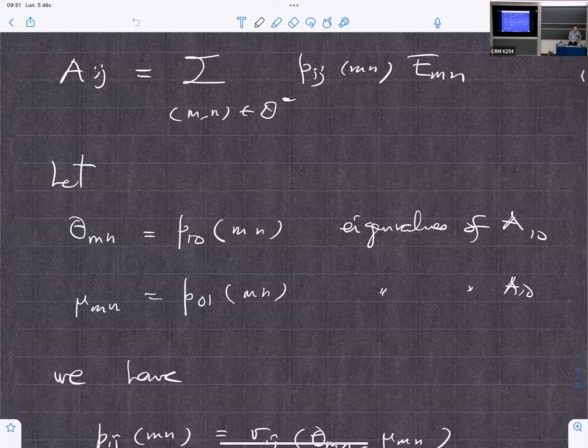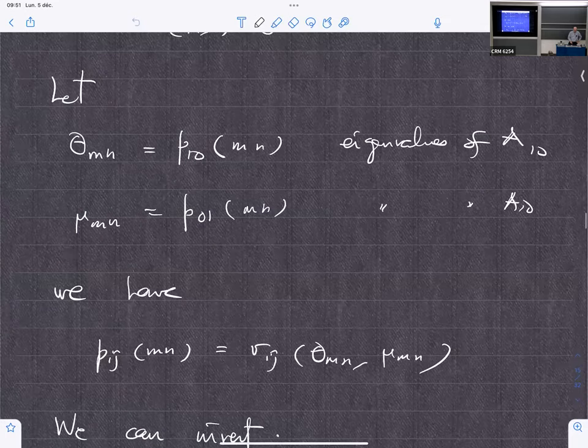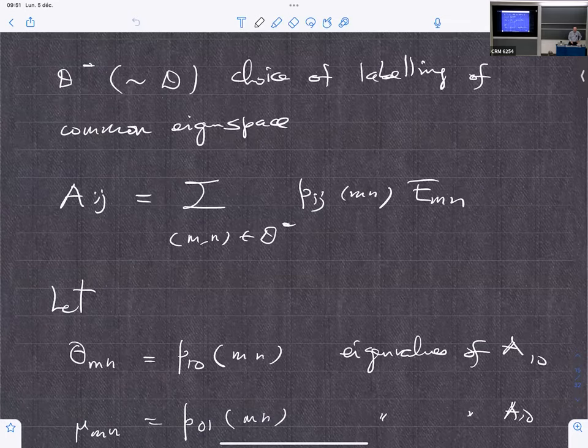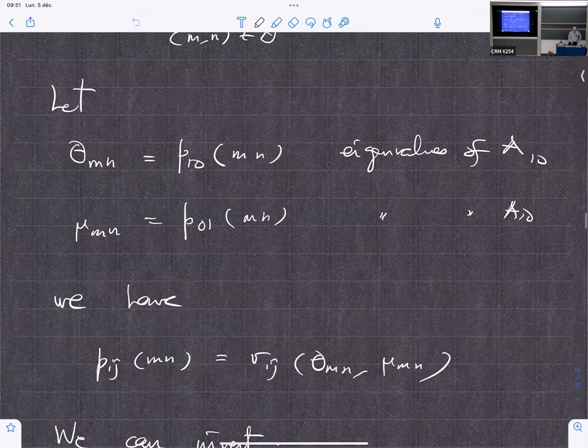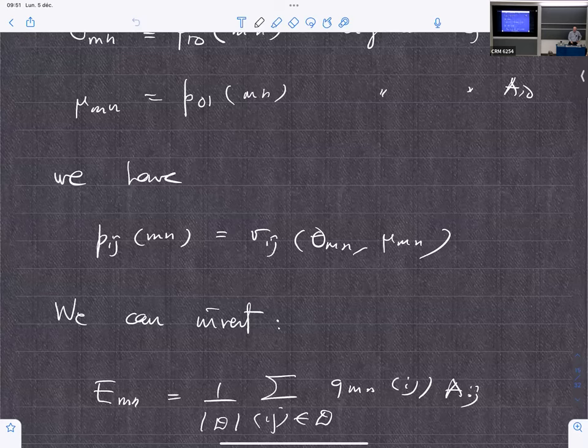So you can use idempotents as the projectors on the eigenspaces. So, you know, there's a dual description of the scheme. But if you, having diagonalized the matrices, if you call the eigenvalues of A_{1,0} theta and the eigenvalues of A_{0,1} mu_{mn}.